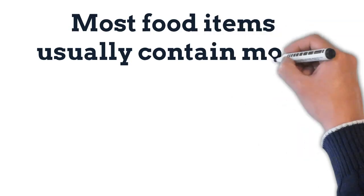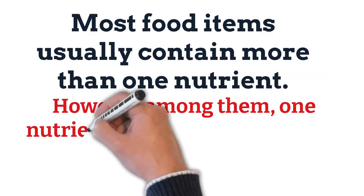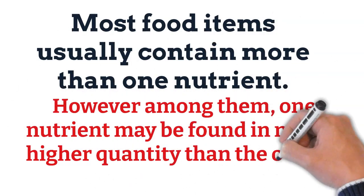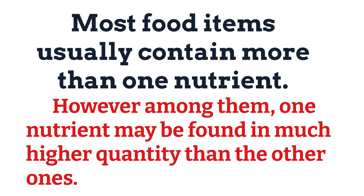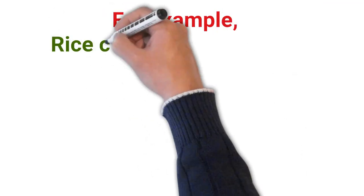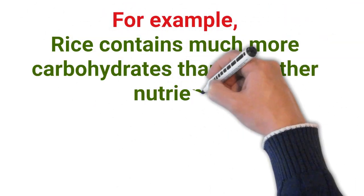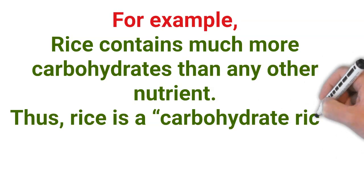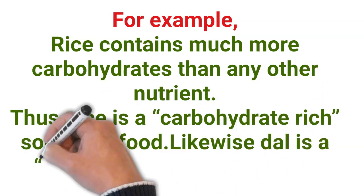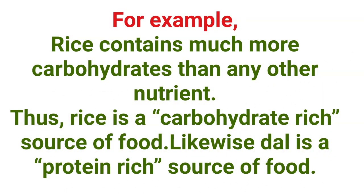Most food items usually contain more than one nutrient. However, among them, one nutrient may be found in much higher quantity than the others. For example, rice contains much more carbohydrate than any other nutrient, so rice is a carbohydrate-rich source of food. Likewise, dal is a protein-rich source of food.